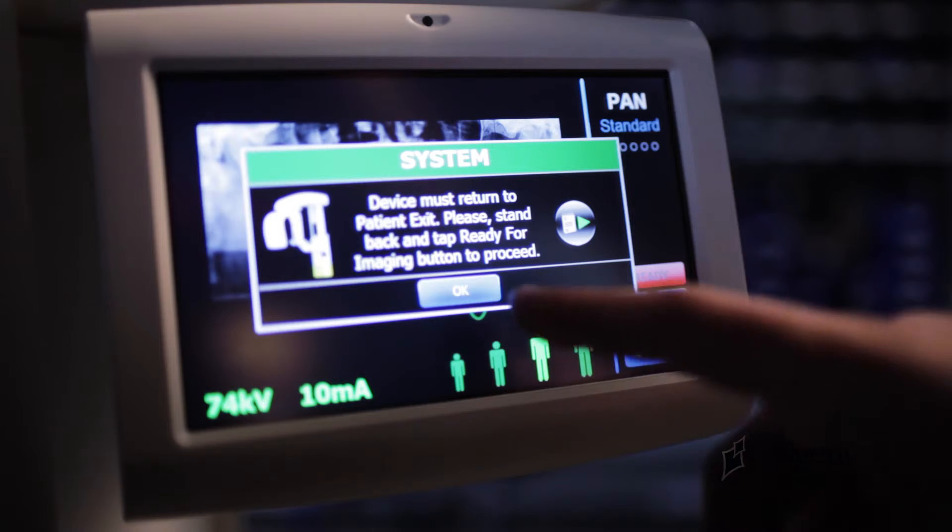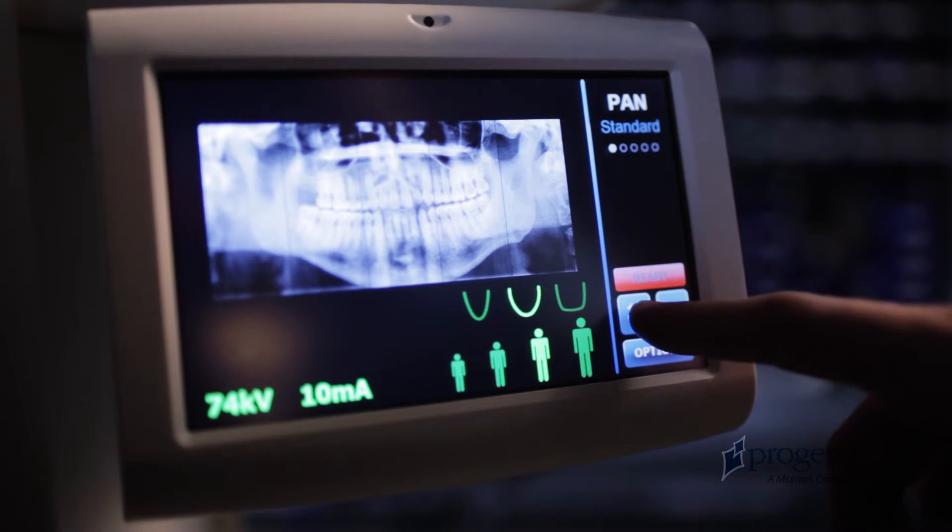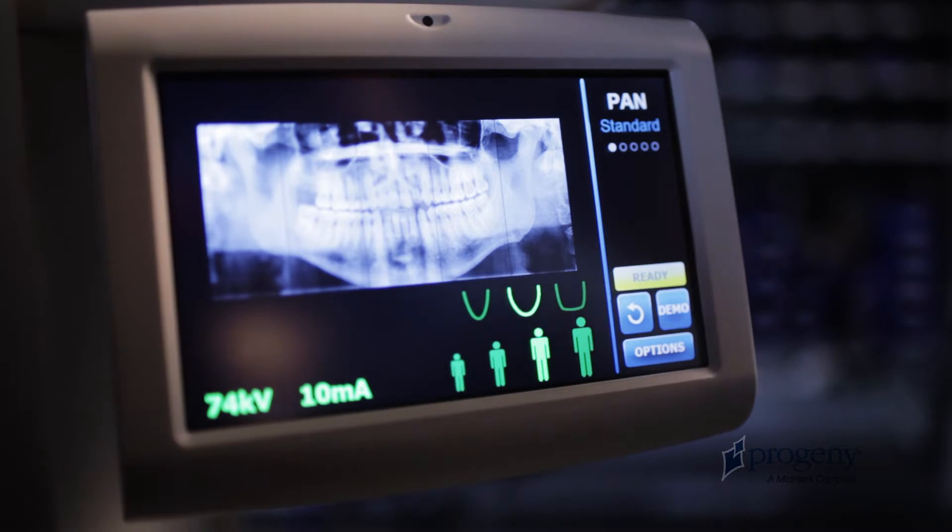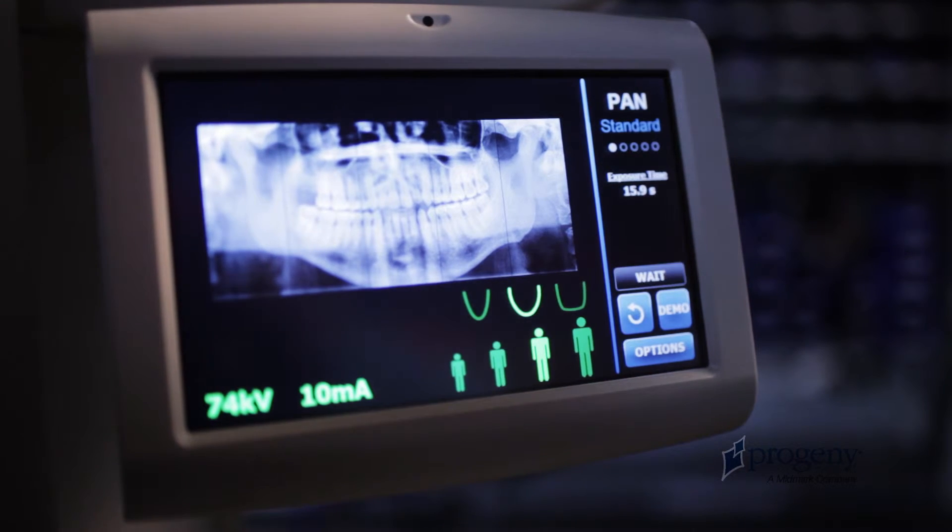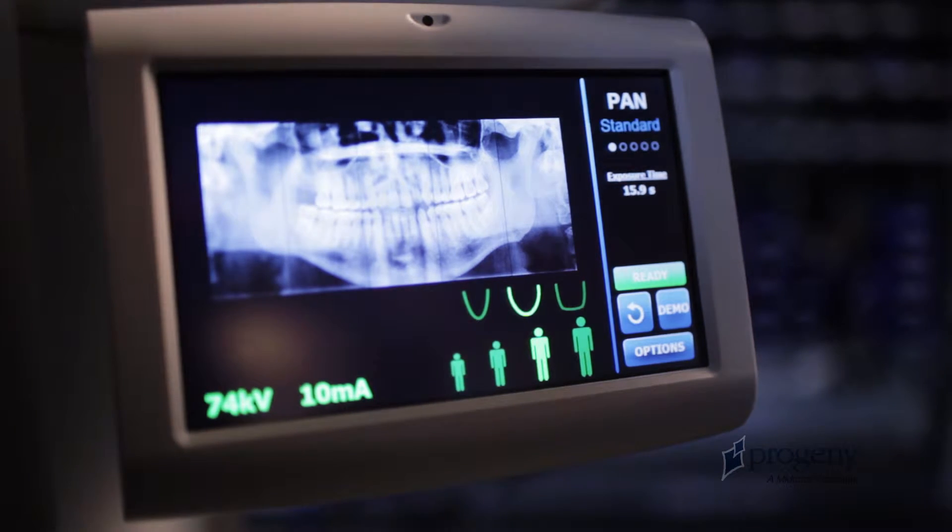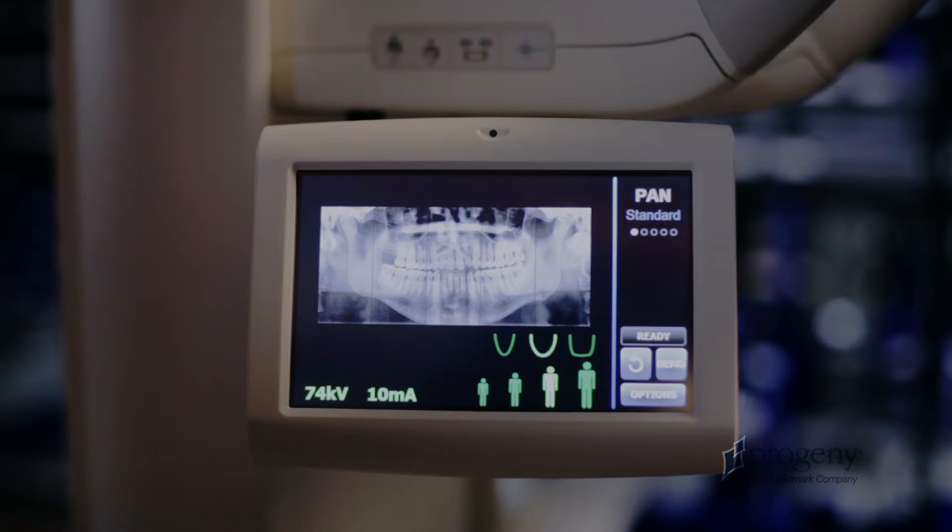A red Ready status indicates that the vantage is in an unknown position. A yellow status indicates that the vantage is in the entry position. A green status indicates that the vantage is ready for imaging. And a blank status indicates that the vantage is in the exit position.